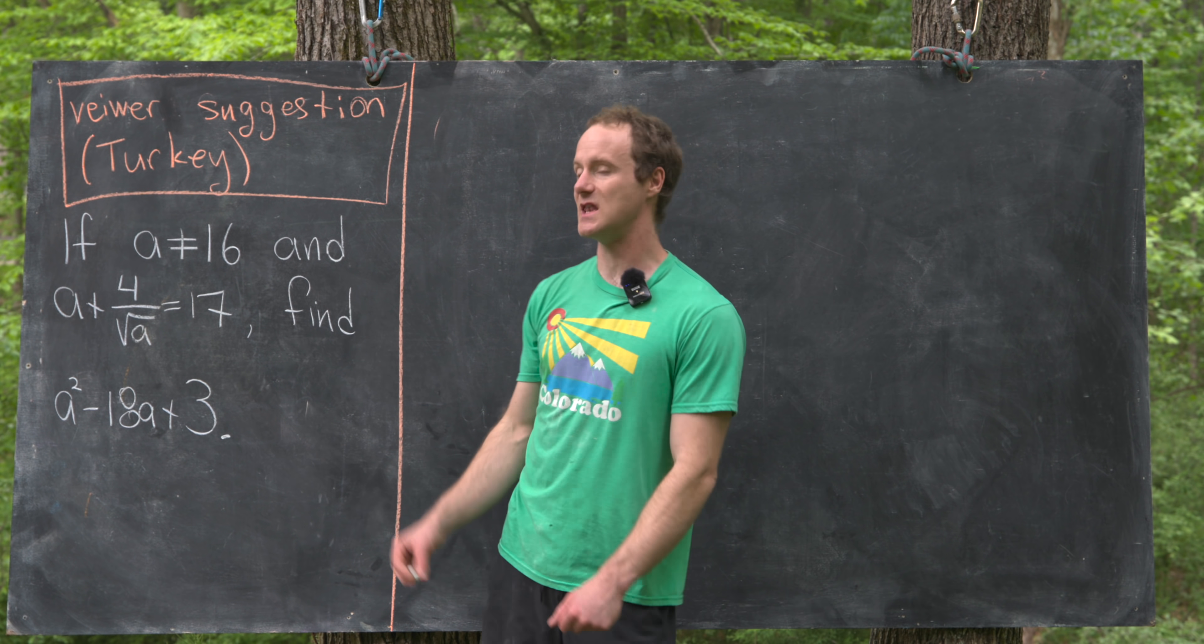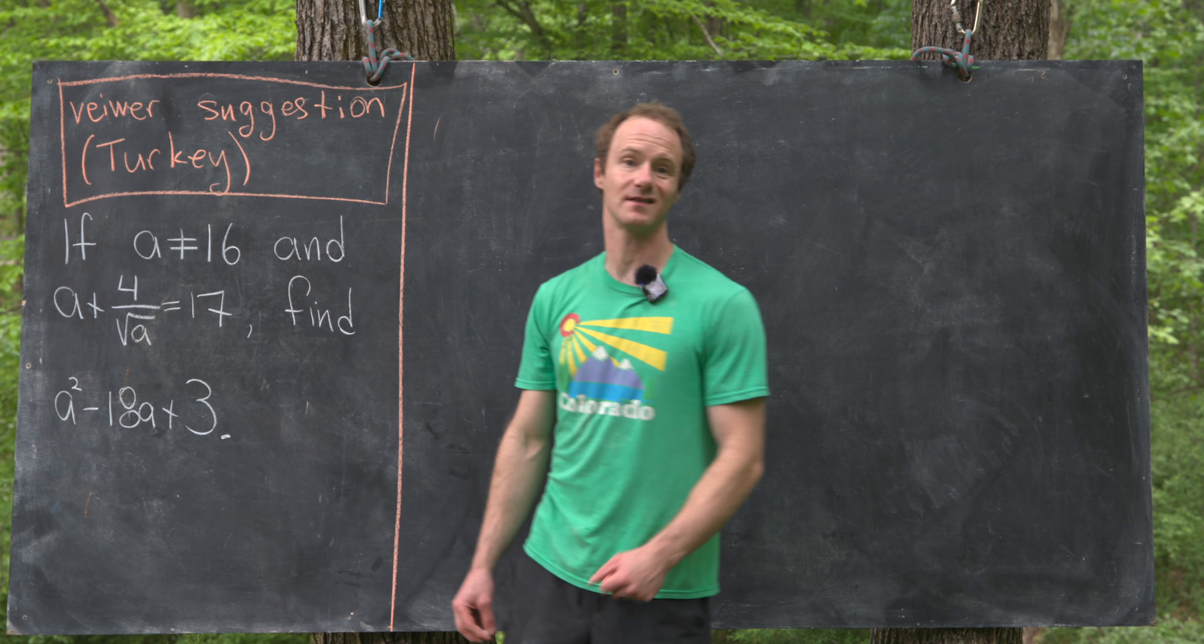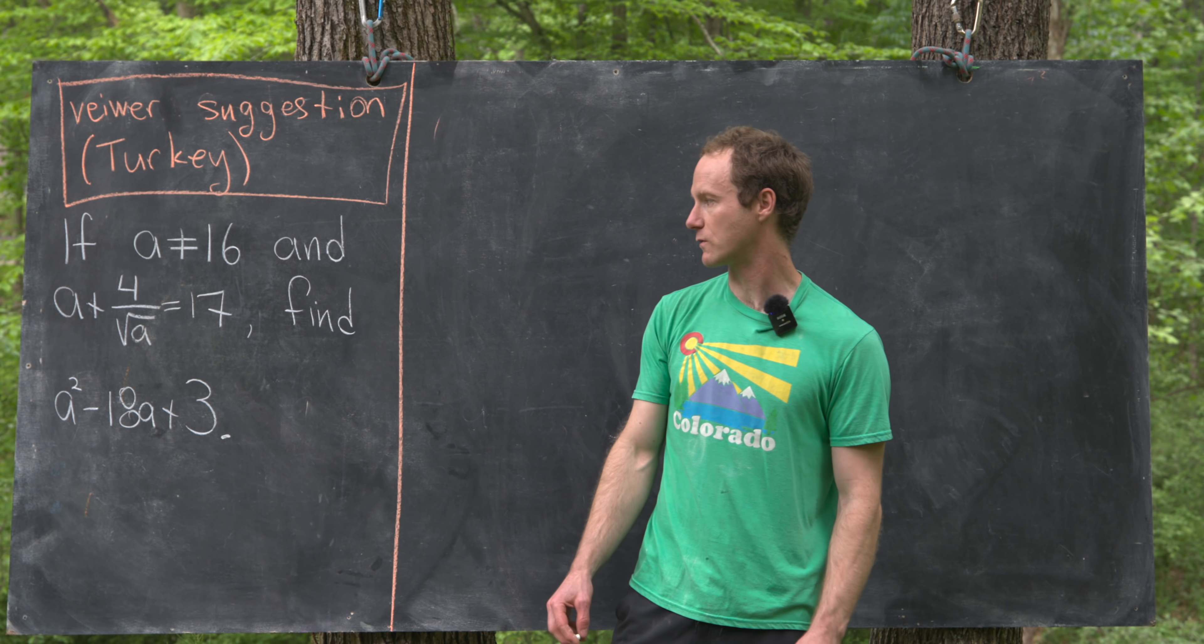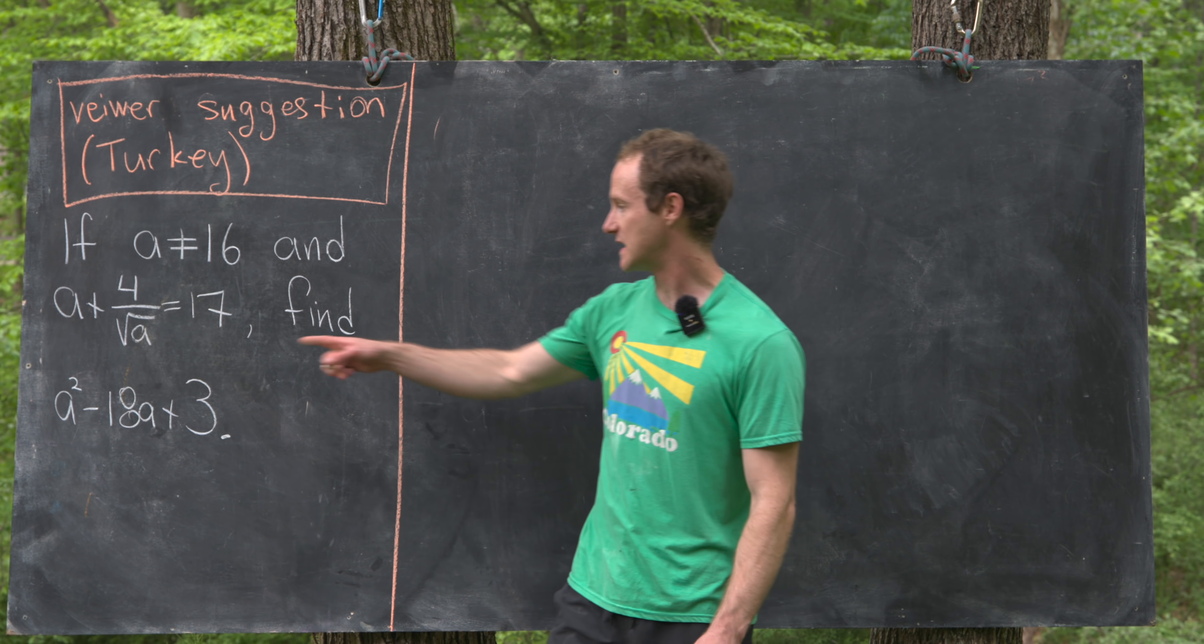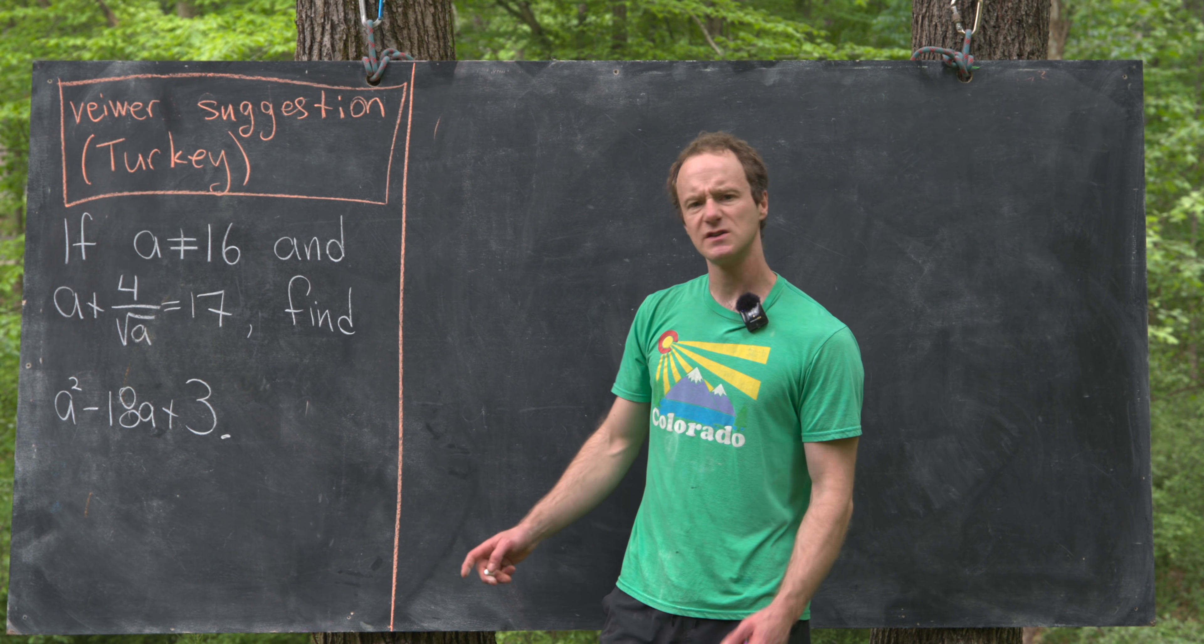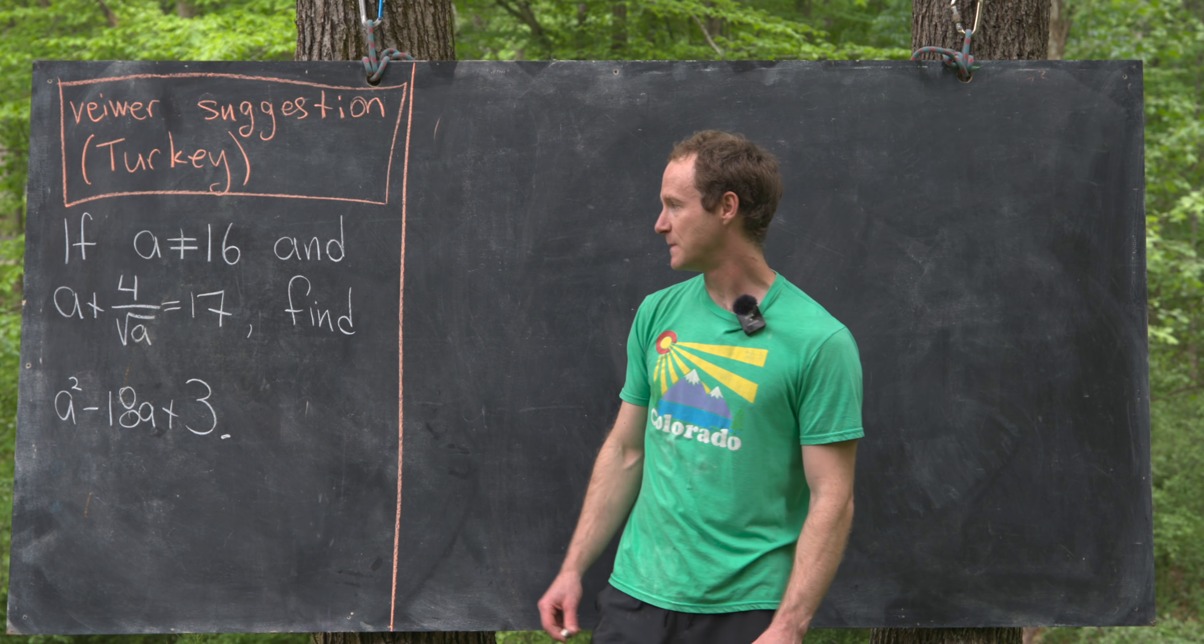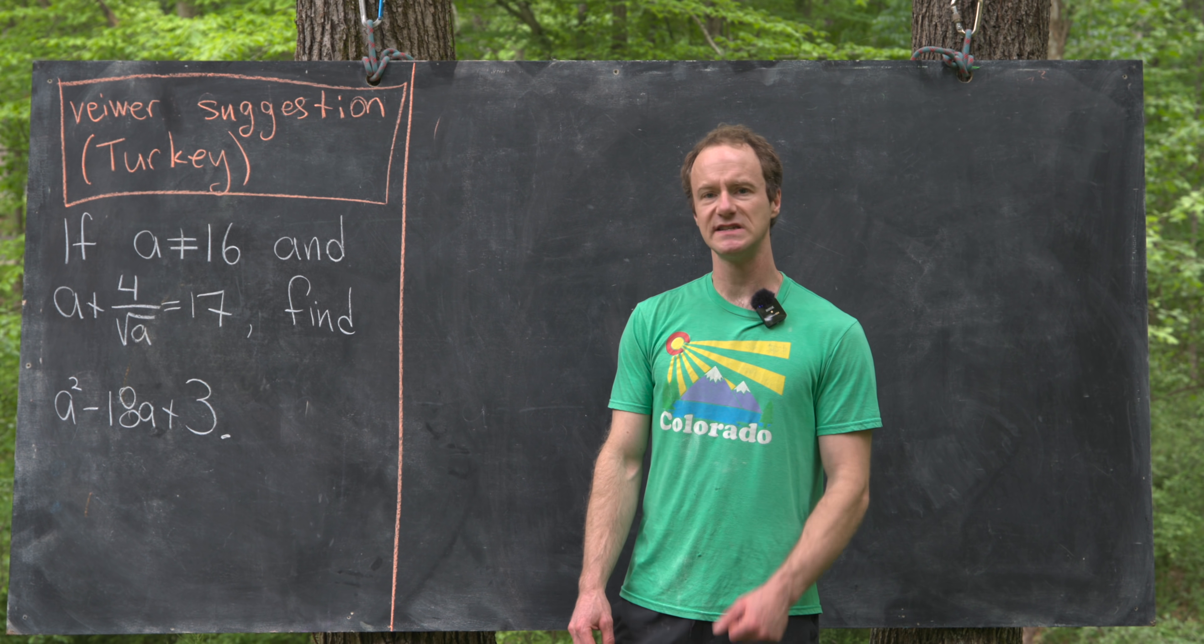We want to suppose that a is not equal to 16, but it satisfies the following radical expression: a plus 4 over the square root of a equals 17. And then we want to find a squared minus 18a plus 3. So we want to find this polynomial value evaluated at a given this radical expression evaluated at a.